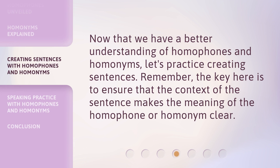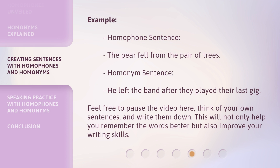Now that we have a better understanding of homophones and homonyms, let's practice creating sentences. Remember, the key here is to ensure that the context of the sentence makes the meaning of the homophone or homonym clear. Example homophone sentence: 'The pear fell from the pair of trees.' Homonym sentence: 'He left the band after they played their last gig.' Feel free to pause the video here, think of your own sentences, and write them down. This will not only help you remember the words better, but also improve your writing skills.